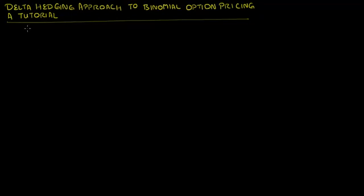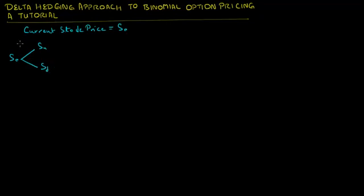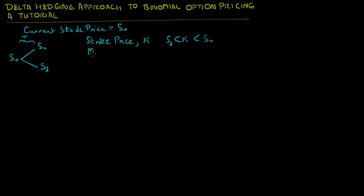Suppose we have a stock with current stock price equal to S0. S0 could go up to SU or down to SD over some time interval T. There is an option on this stock with strike price K, where K is greater than SD and less than SU, and the time to maturity of this option is also T.